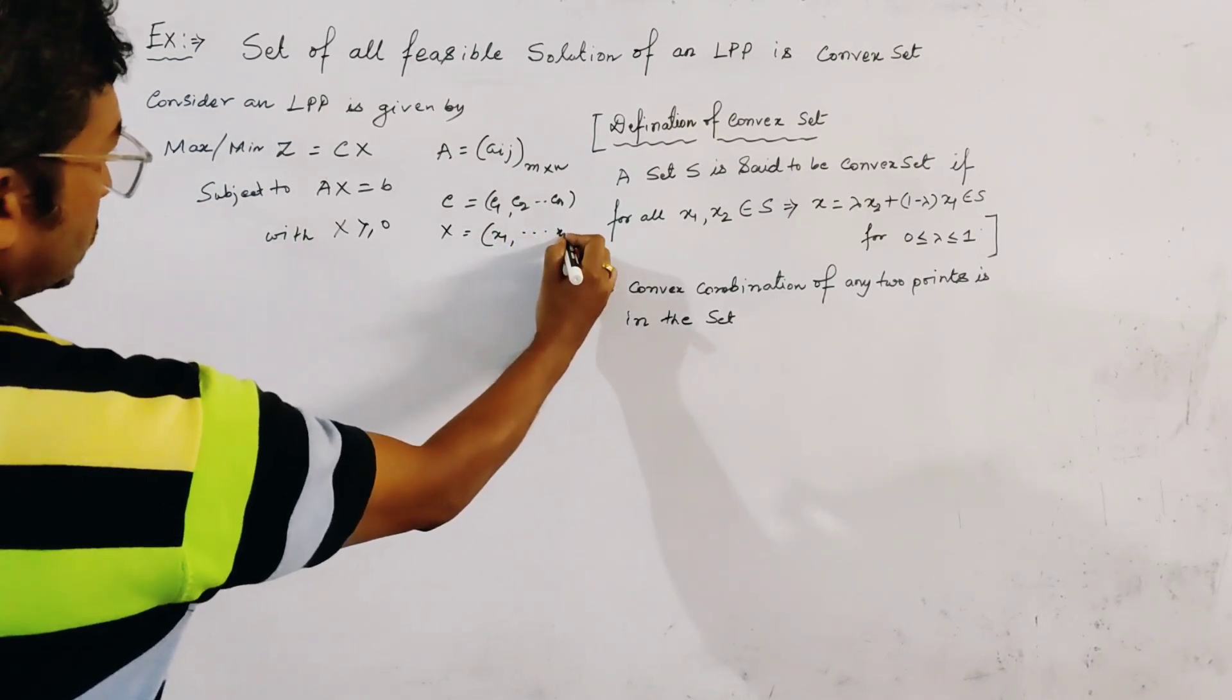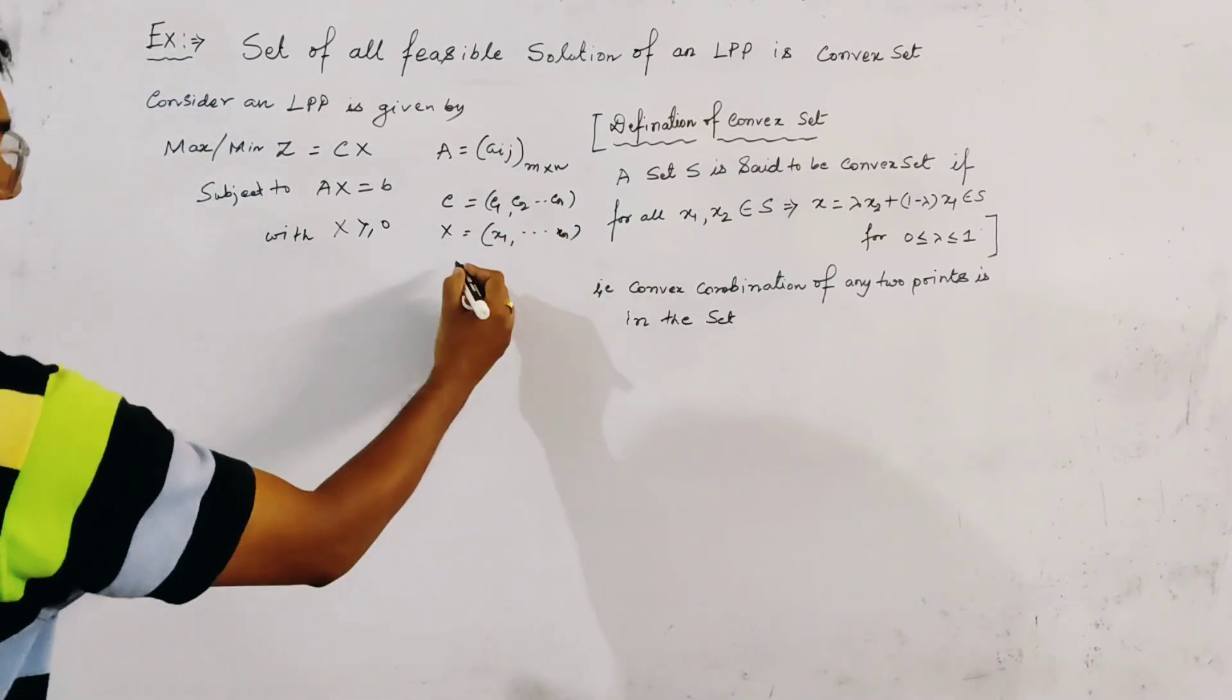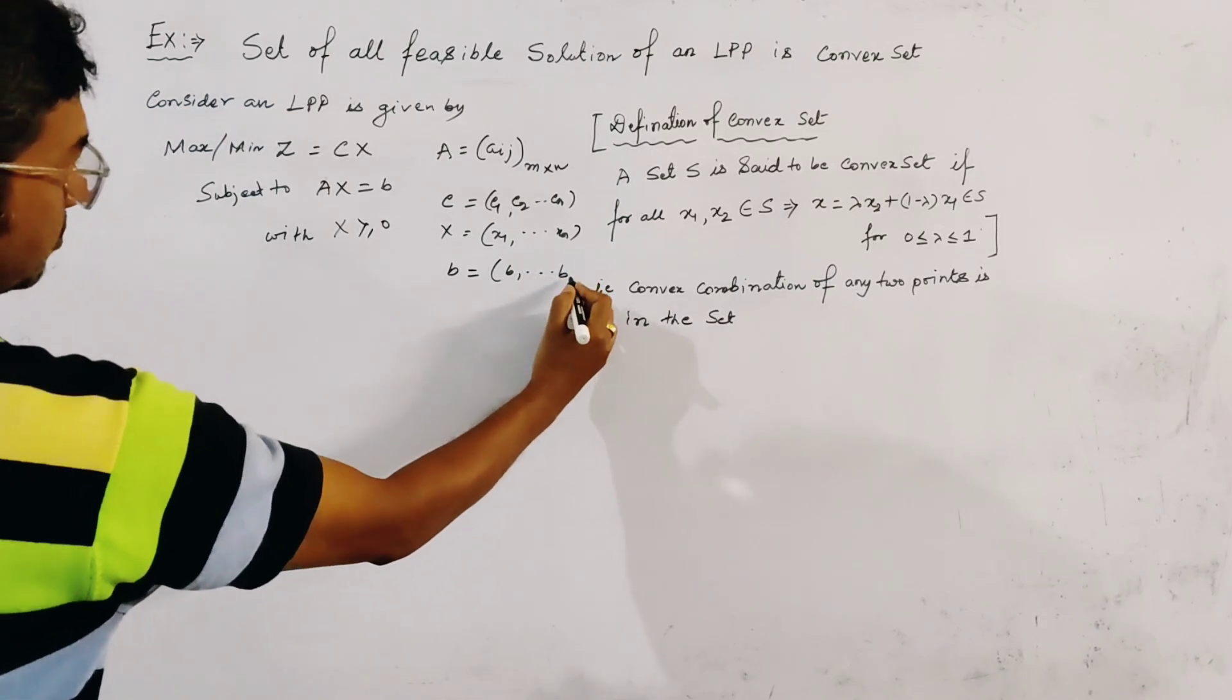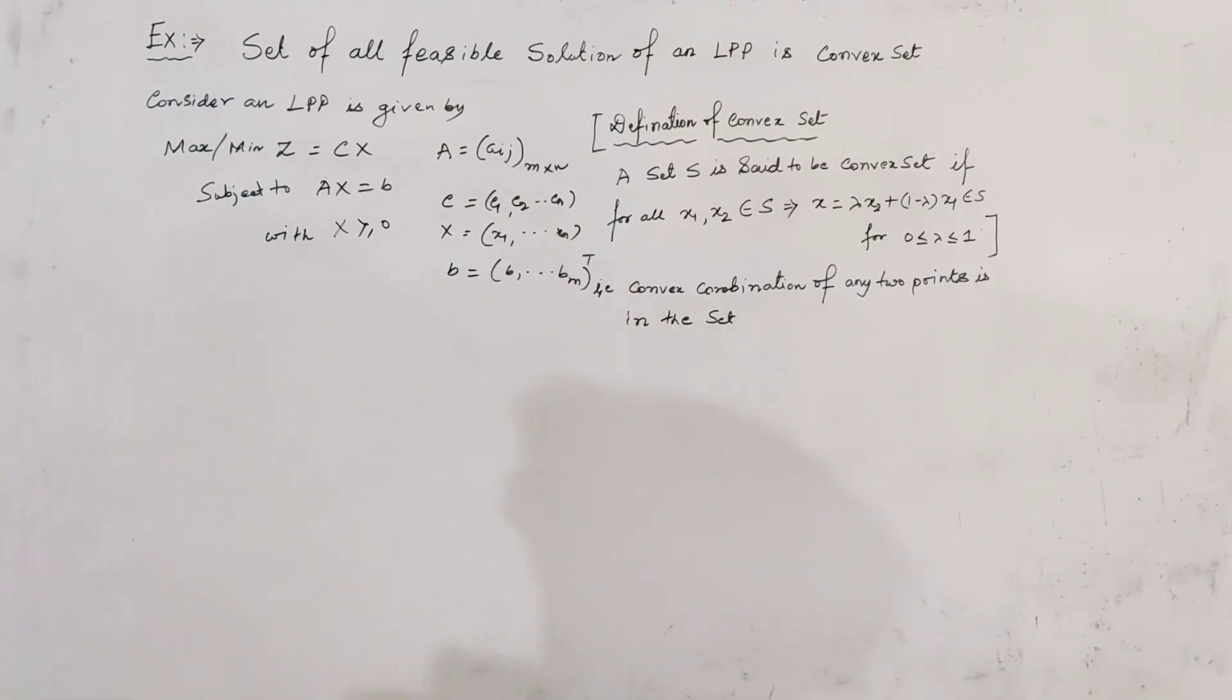X, this is X1, X2, Xn, this is M variable, and B, this is B1 to Bm transpose.